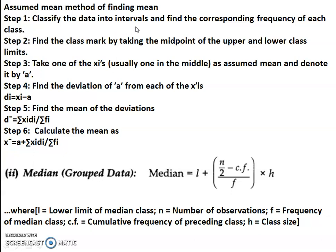Assumed mean method: classify the data into intervals and find the corresponding frequency of each class. Find the class mark as (upper limit + lower limit) / 2. Assume one class mark as the assumed mean A. Then find the deviation: di = xi − A. Find the mean of deviations as Σ(fi × di) / Σfi. Finally, add the assumed mean: x̄ = A + Σ(fi × di) / Σfi.